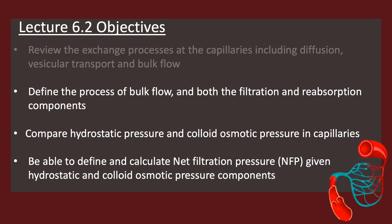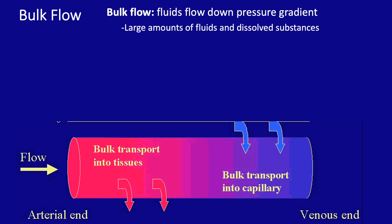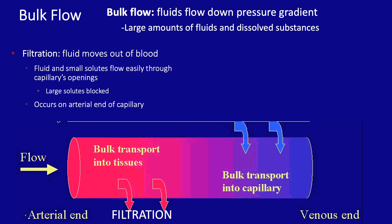We'll now look specifically at bulk flow, including both filtration and reabsorption. With bulk flow, we're talking about the movement of a large amount of fluid and the things dissolved within it — those dissolved solutes — occurring down a pressure gradient, moving from high to low. Filtration occurs on the arterial end of the capillary. Blood is pushed through the different openings in the capillaries, such as intercellular clefts or fenestrations.